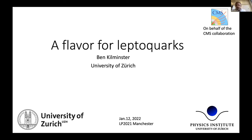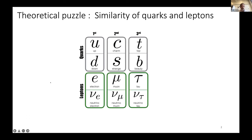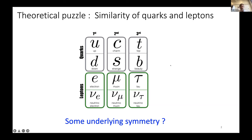I'll talk about leptoquarks today and how they address some mysteries about flavor that we see. First, I want to start with a theoretical puzzle: probably one of the first things we all noticed when we looked at the Standard Model is that we've got the same number of quarks as leptons, and we can organize them in three generations. So is there some underlying symmetry here?